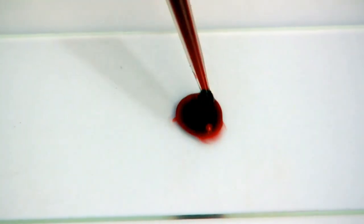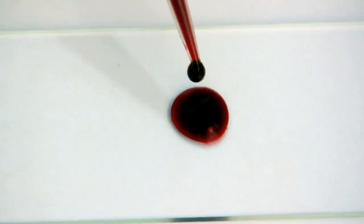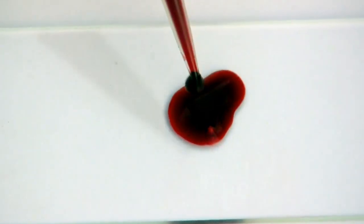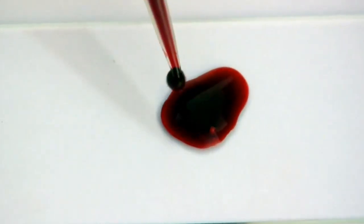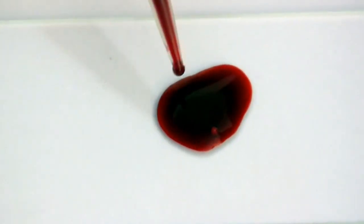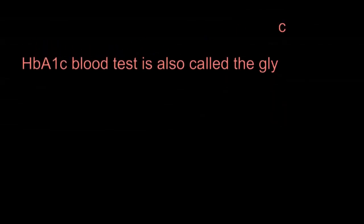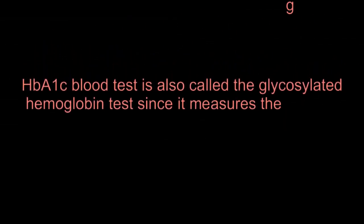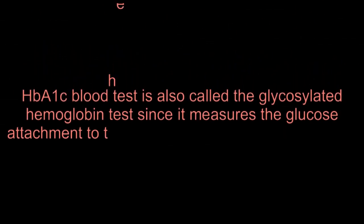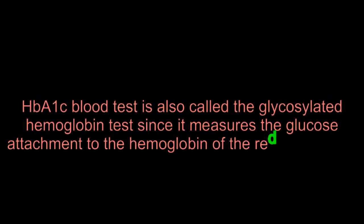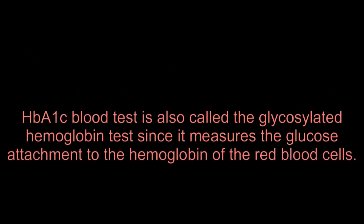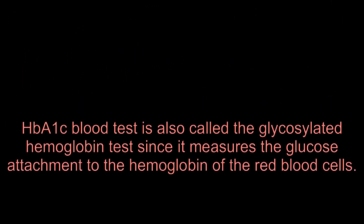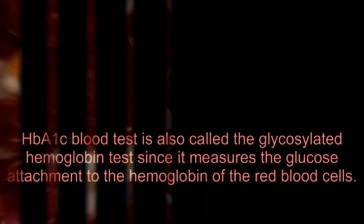If the result yields values within the HbA1c normal range, then the patient is safe from the complications of diabetes. The HbA1c blood test is also called the glycosylated hemoglobin test, since it measures the glucose attachment to the hemoglobin of the red blood cells.